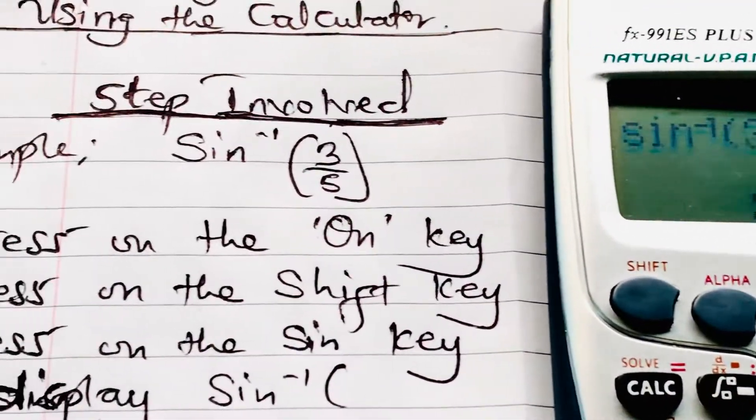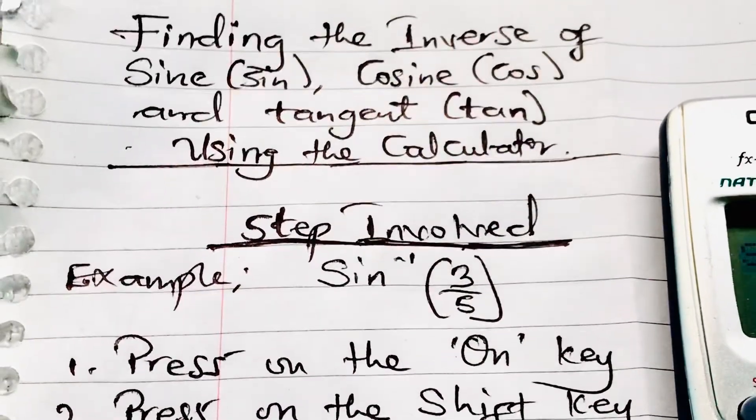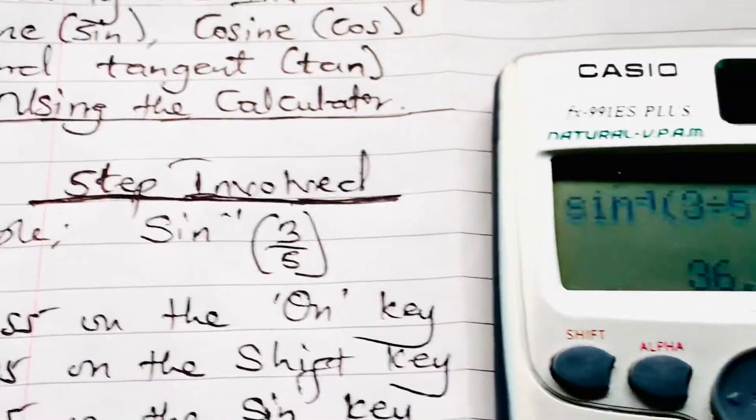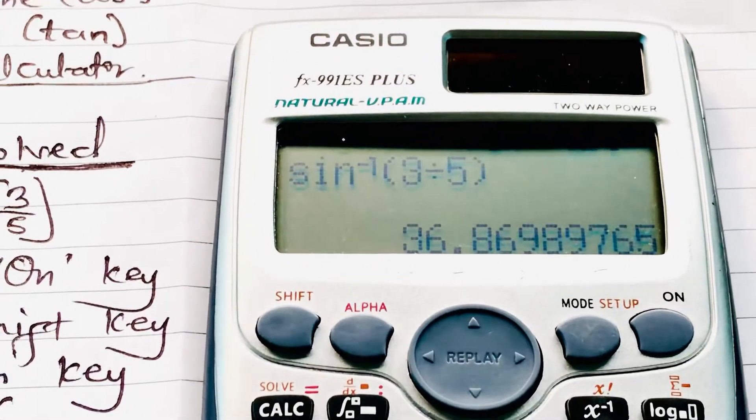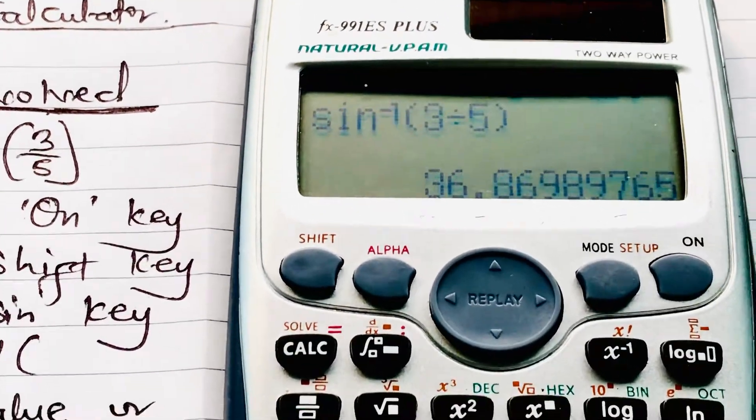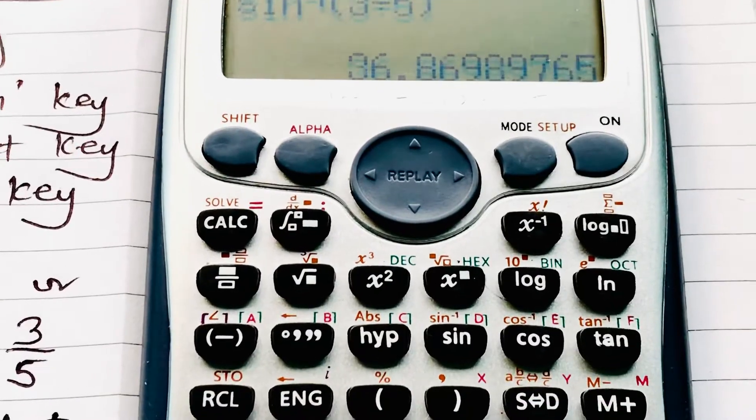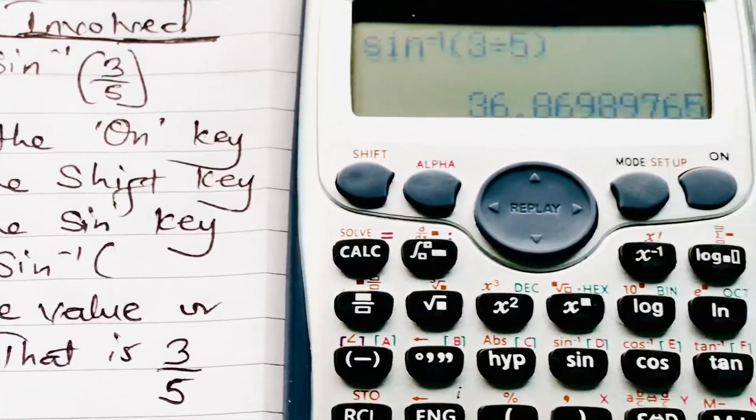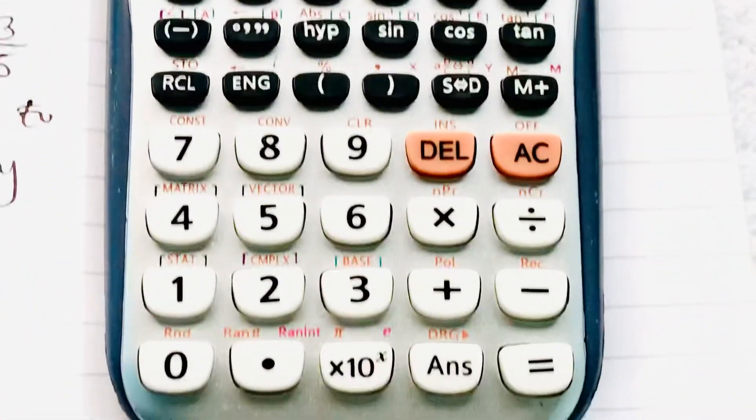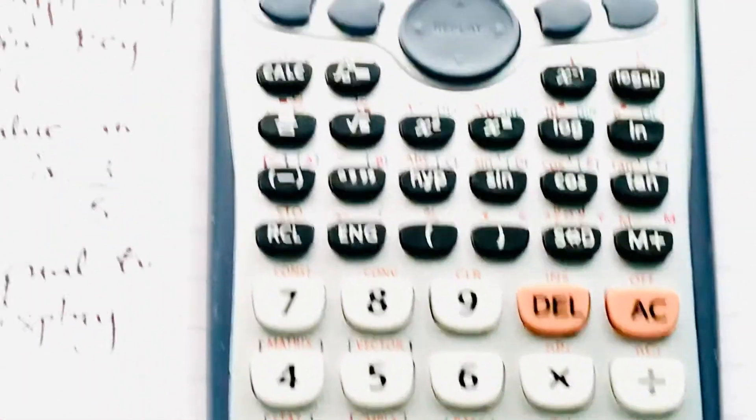In solving for the sine inverse, we move first to the ON key to turn on our calculator, then to the SHIFT, then to the SINE, then to the number we are looking for. Then we press EQUAL to display our answer.